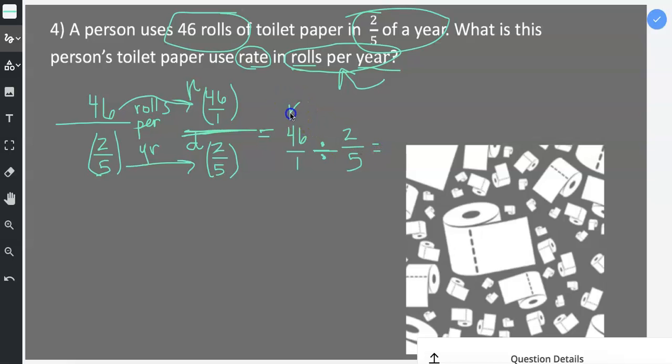And then we're ready for that final phase where you apply keep, change, reciprocal. So the keep locks in the first fraction, 46 over one. You change the division to multiplication. And then you record the reciprocal of two-fifths, which would be five halves.